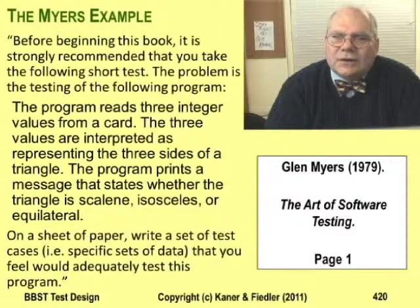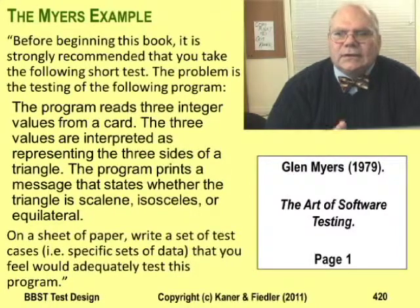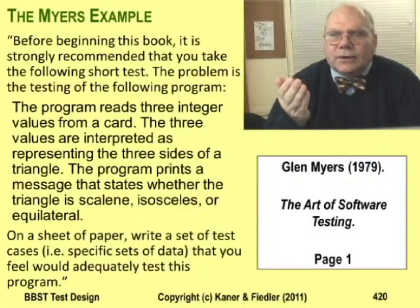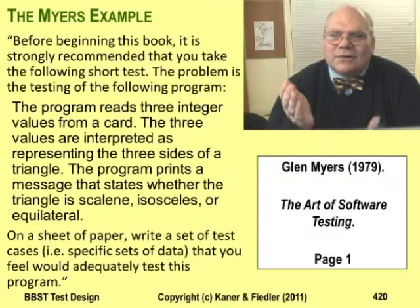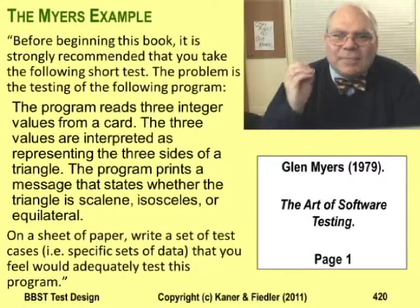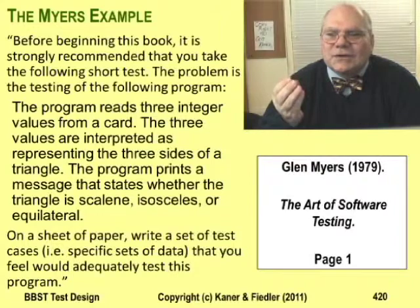In the first significant book on software testing, Glen Myers introduced his approach to domain testing with the triangle problem, which has become the classic domain testing example. Myers included many examples of tests along secondary dimensions, like testing letters in numeric fields or only entering two values when the program needed three. He didn't differentiate between primary and secondary dimensions. The example challenged the reader to imagine how to test a triangle — and then he said, 'Gotcha! I bet you didn't think of these tests.'